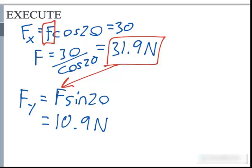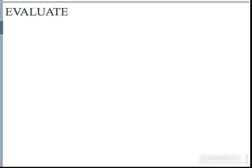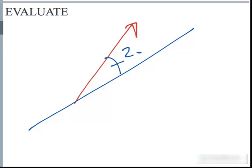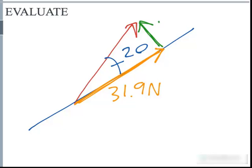Now let's go ahead and evaluate this. We were given a force at a 20 degree angle, and if we were to resolve it into its two components, one along this direction here and one along this direction here. If we were to write down the values that we solved for, this one was the 31.9 newtons and this one was the 10.9 newtons.